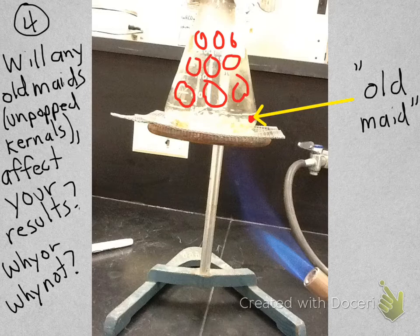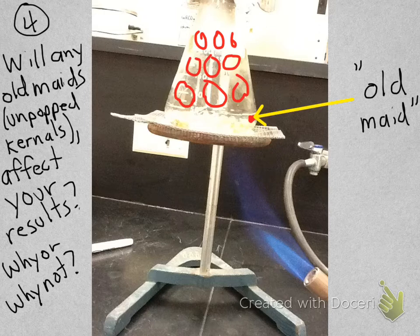I've placed a 4 there because I want you to write this in on the back page and make this question number 4 for your analysis questions. So rather than 3 analysis questions, you'll have 4. Again, write this question down. Will any old maids, unpopped kernels, affect your results? Why or why not? So I want you to think long and hard about that and add that to your analysis questions. Question number 4 on your analysis questions. So that should be on the back side at the very end of your data. Make question number 4. Will any old maids affect your results? Why or why not? So I want you to explain why or why not.